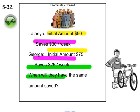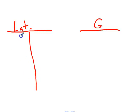I'm going to ask to see your work. So there's two different methods. One of the methods you could have tried is you could have done a data table. For example, we could have had a data table with Latanya and George. Now, zero weeks, how much did Latanya start with? She started with $50. What did George start out with? George started out with $75.